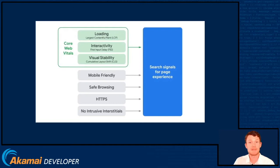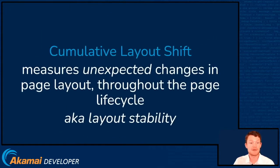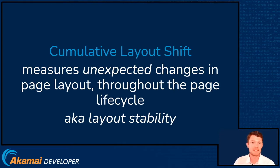Google has told us that the three Core Web Vitals — Largest Contentful Paint, First Input Delay, and Cumulative Layout Shift — will feed into search signals for page experience, for mobile search at least, come May 2021. Cumulative Layout Shift measures unexpected changes in the page layout throughout the page lifecycle, so you can call this Layout Stability.